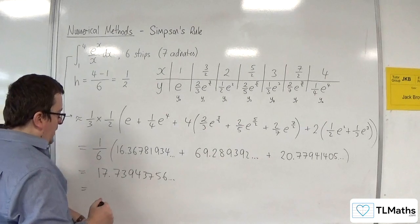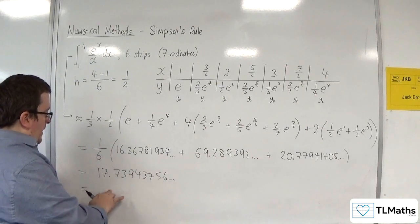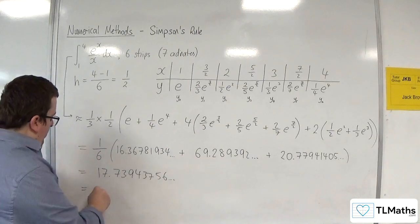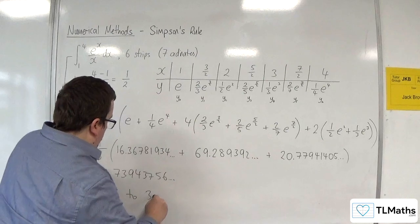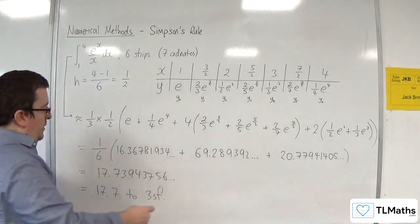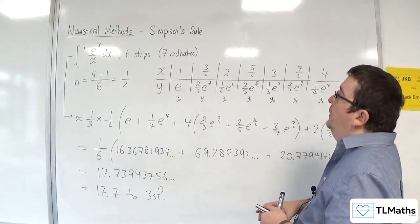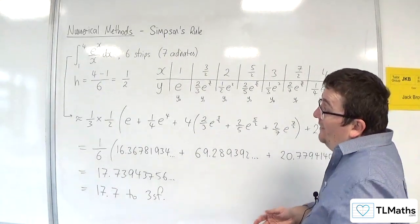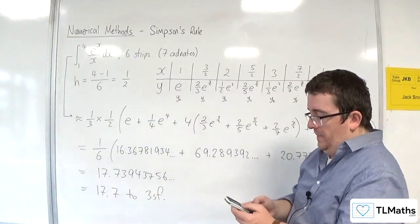Okay. Now, this might not be exact up to that point, just to be clear. But it will be accurate enough. So 17.7 to 3 significant figures. Now, of course, you would give it to the required number of significant figures that the question asks for. Now, this one I didn't specify.